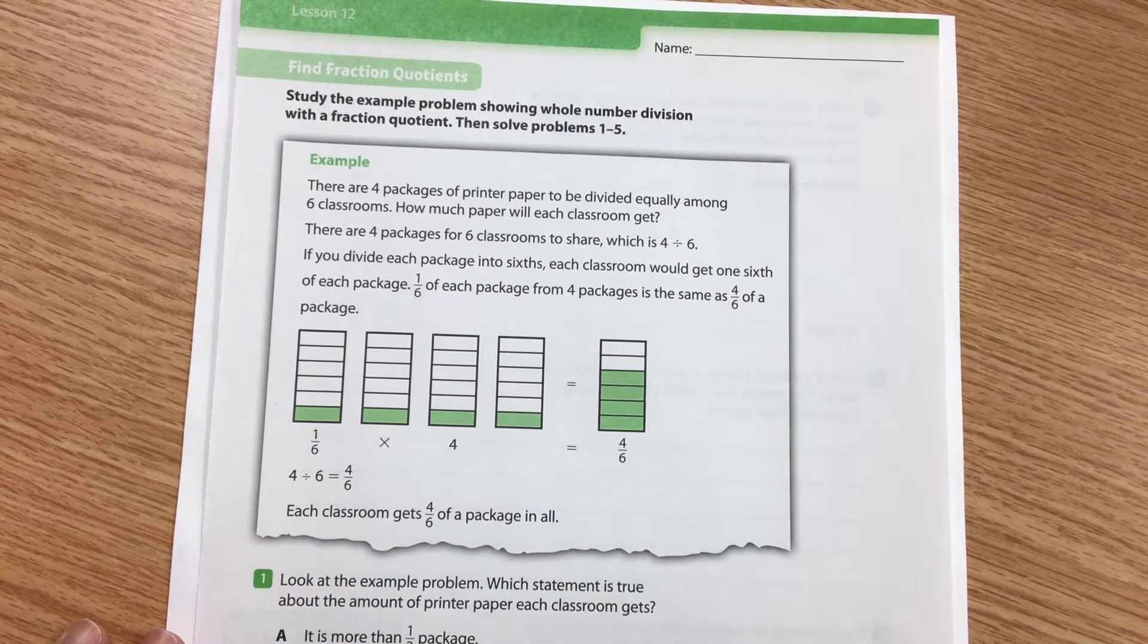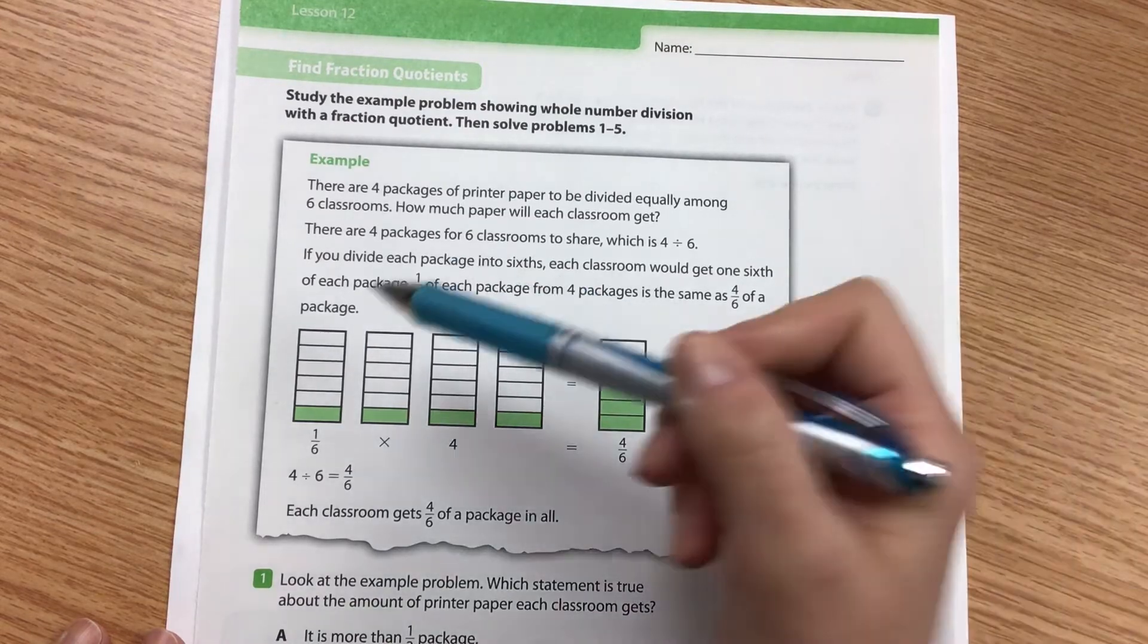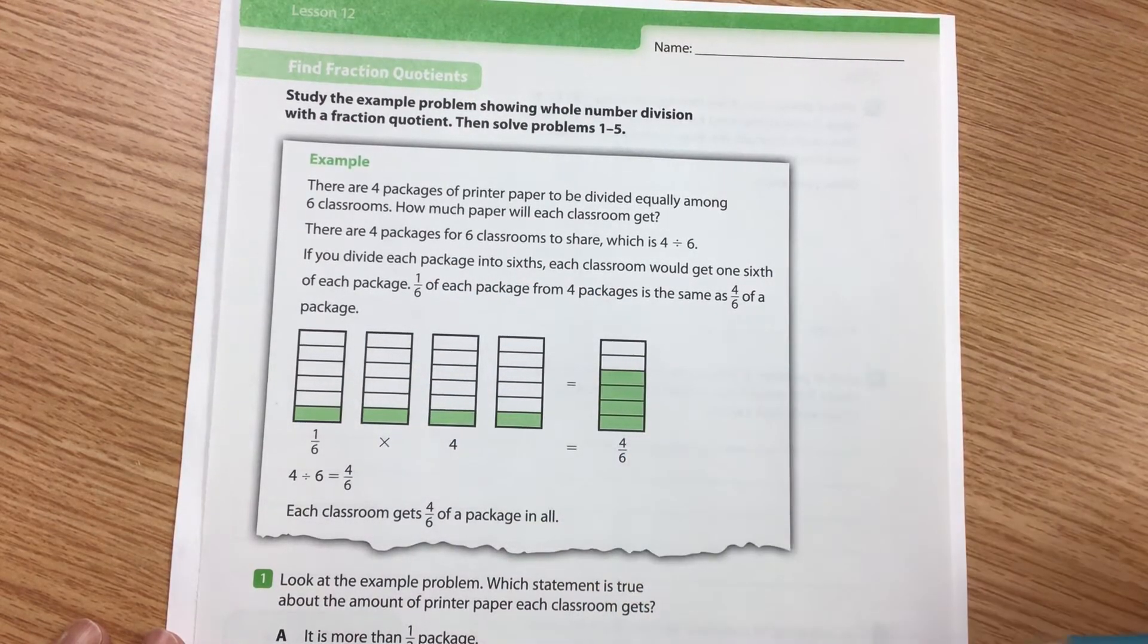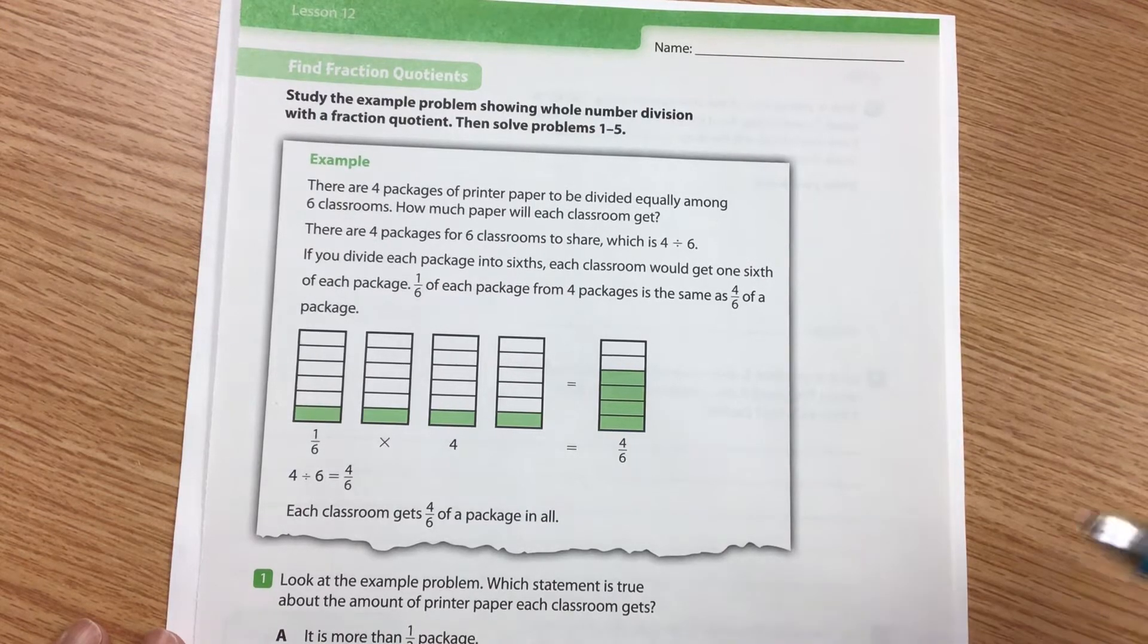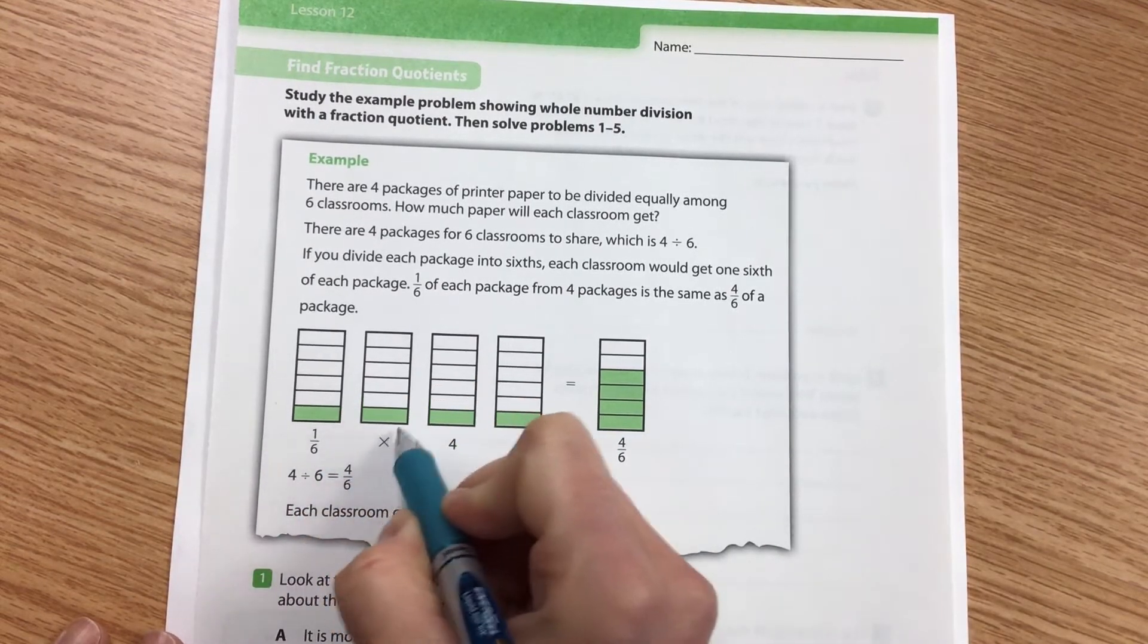If you divide each package into six, as they've done here, each classroom would get one-sixth of each package. So you can see that in green right here.